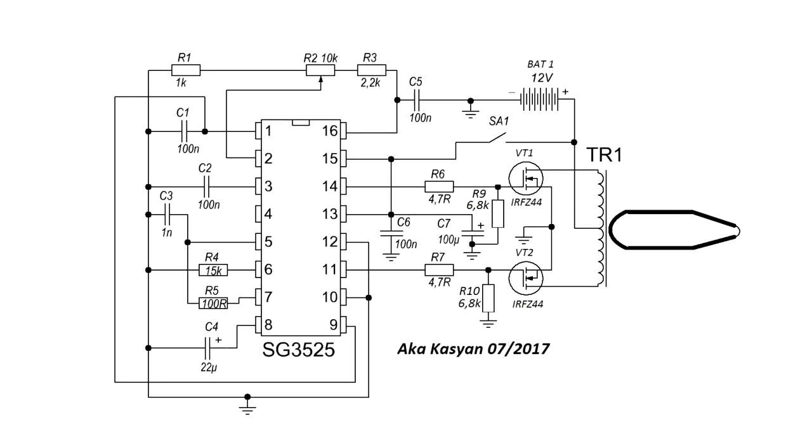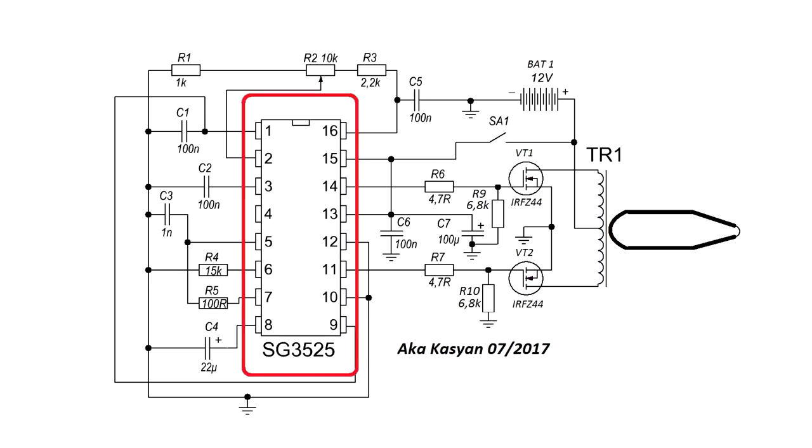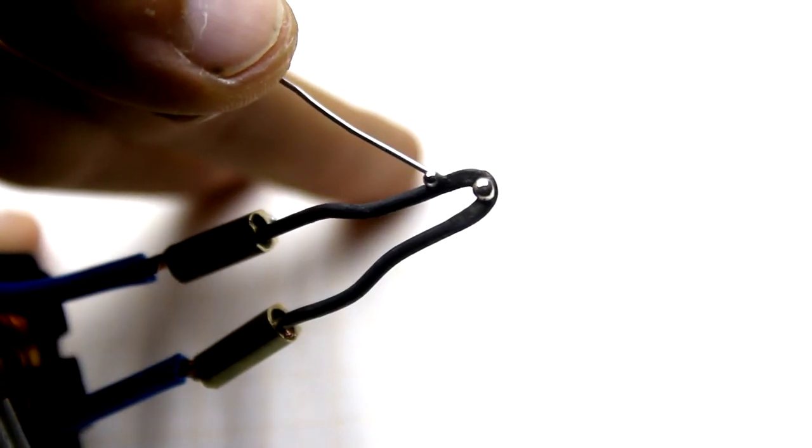The principle of operation is very simple. The battery supplies power to a voltage converter controlled by a push-pull controller SG3525. The secondary winding of the transformer is a thick copper bus that is shorted by a tip, which, in consequence of a short circuit, heats up.